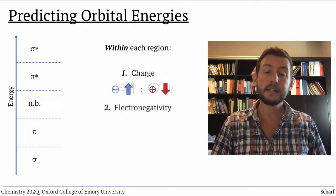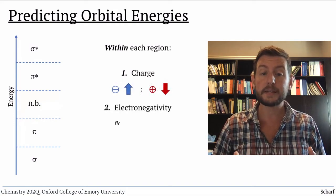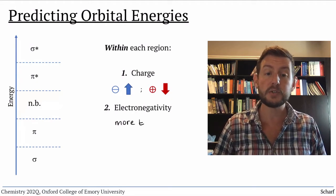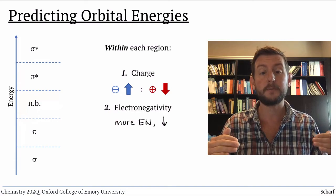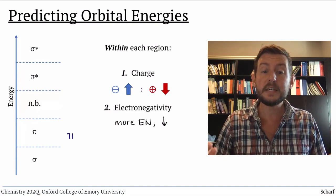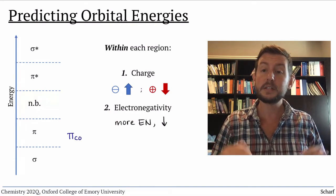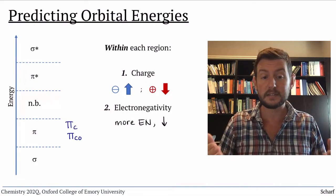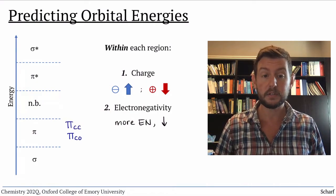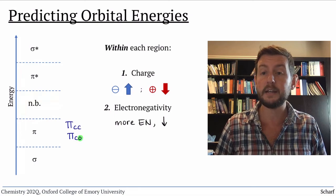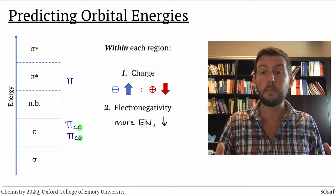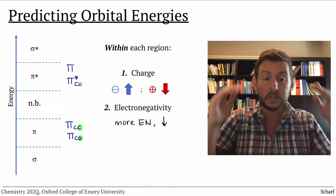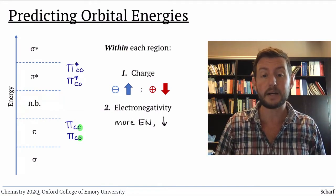The next trend is with electronegativity. The more electronegative the atoms associated with a particular orbital, the lower the energy of that orbital. So a CO pi orbital is lower in energy than a CC pi orbital, because O is more electronegative than C. Likewise, a CO pi star orbital is lower in energy than a CC pi star orbital.